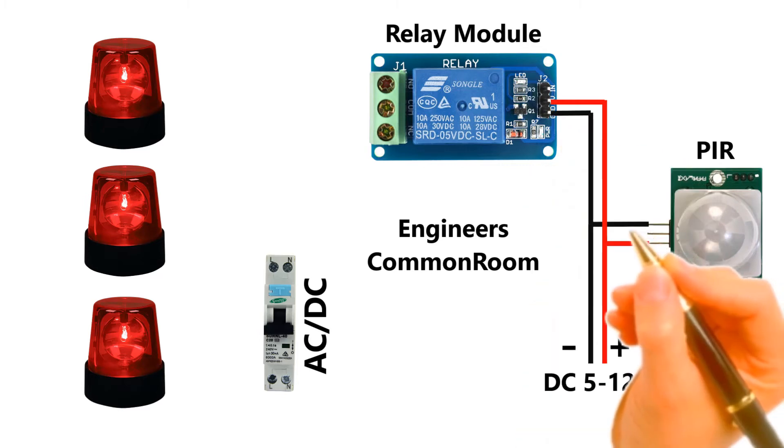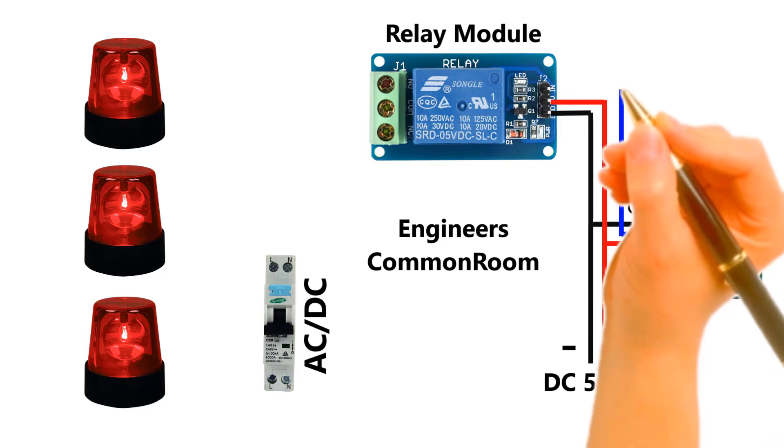Now I connect the PIR sensor output to the relay module input line to control power.